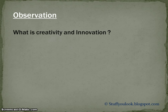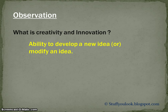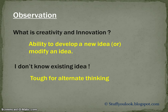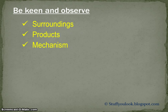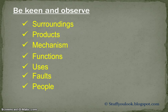What does it mean by creativity and innovation? It's your ability to develop an all-new idea or modify the existing idea based on the requirements or demands of users or your own identification. Unless you know about the existing idea, you cannot develop an alternative solution. This is where your observation skill helps you. You are required to be keen and observe things — surroundings, environment, people, ongoings, products, mechanisms, product functions, any faults and shortcomings, and even people's attitude, behaviour and interests. Start analyzing and you will find some interesting facts as well.